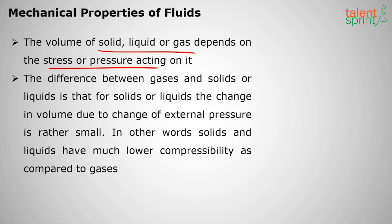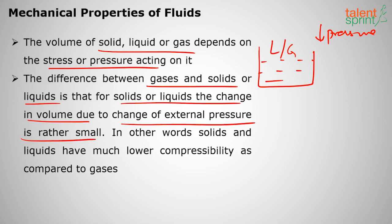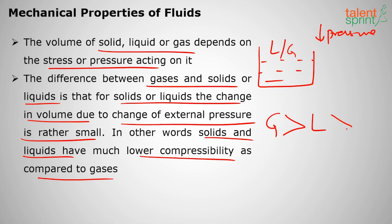The volume of a solid, liquid, or gas depends on the stress or pressure acting on it. For solids and liquids, the change in volume due to a change in external pressure is rather small — they have much lower compressibility than gases. Solids are the least compressible, liquids are moderately compressible, and gases have very high compressibility.